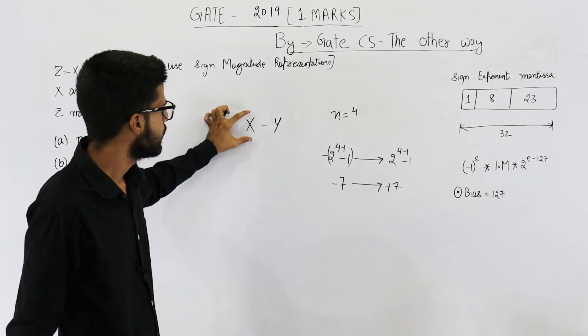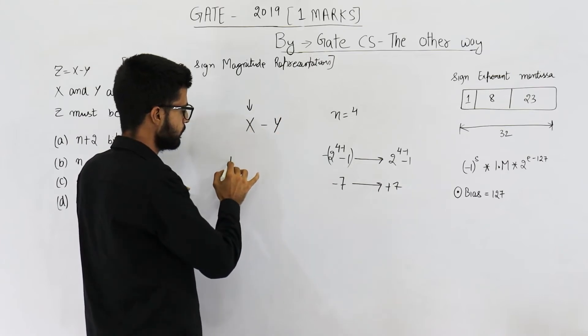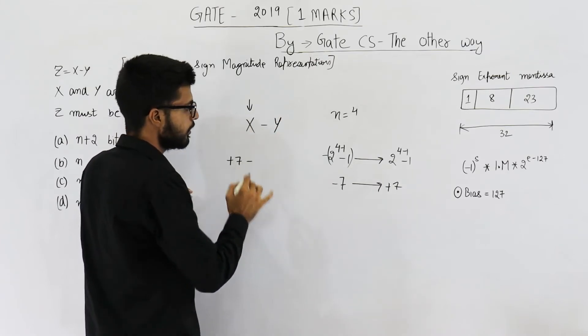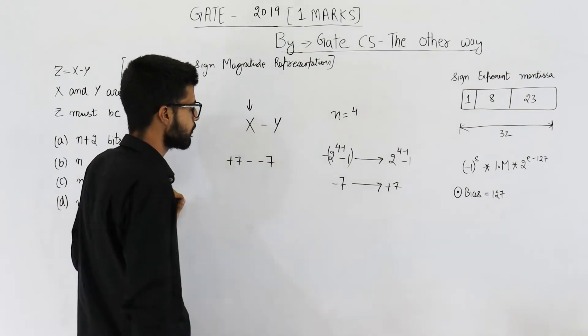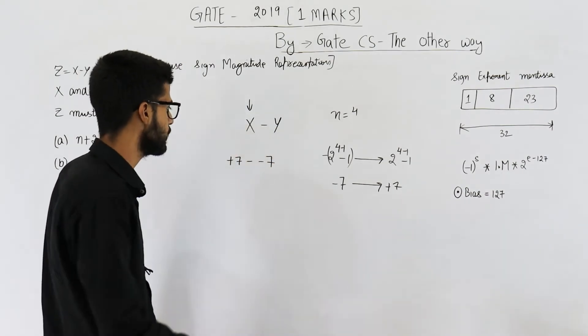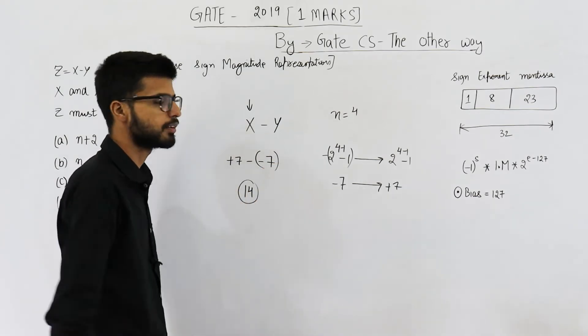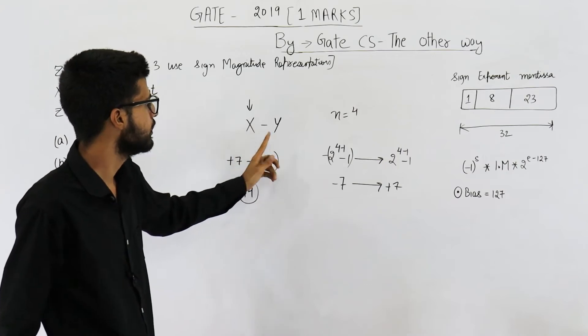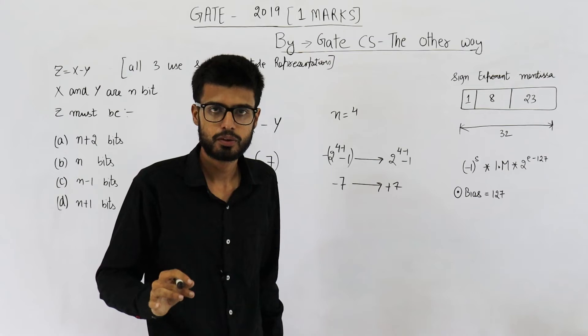Let us take x is equal to plus 7. If this number x is plus 7 and y is minus 7, x minus y will be 14. That means in worst case, x minus y is 14 if x and y are 4 bits.